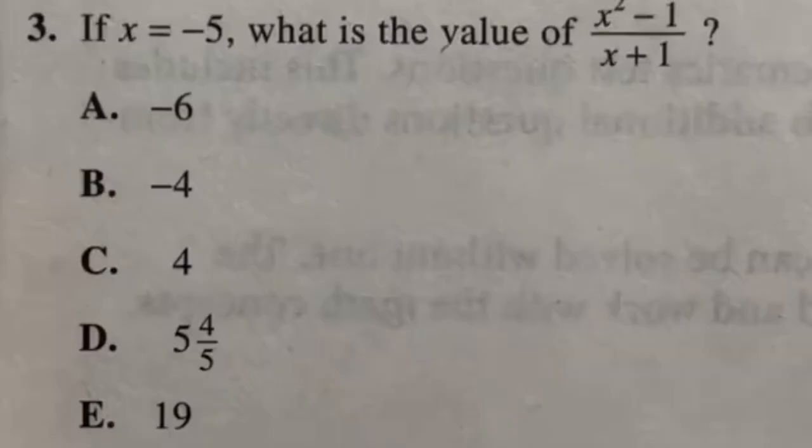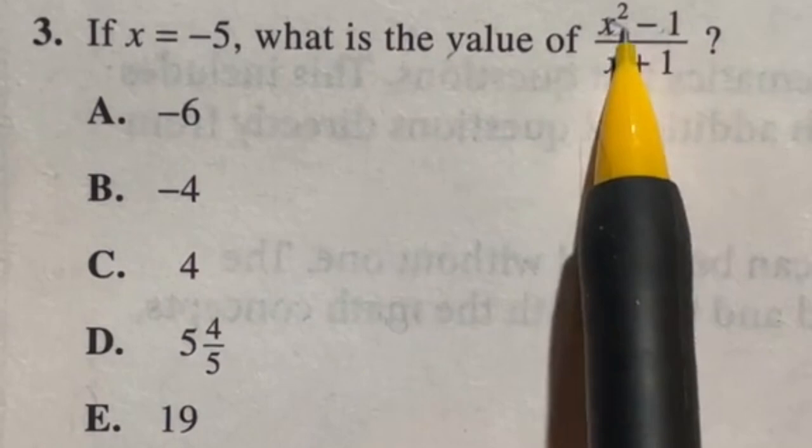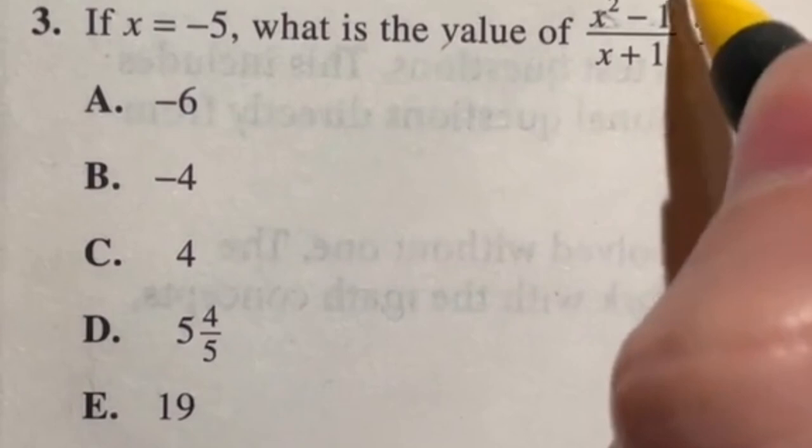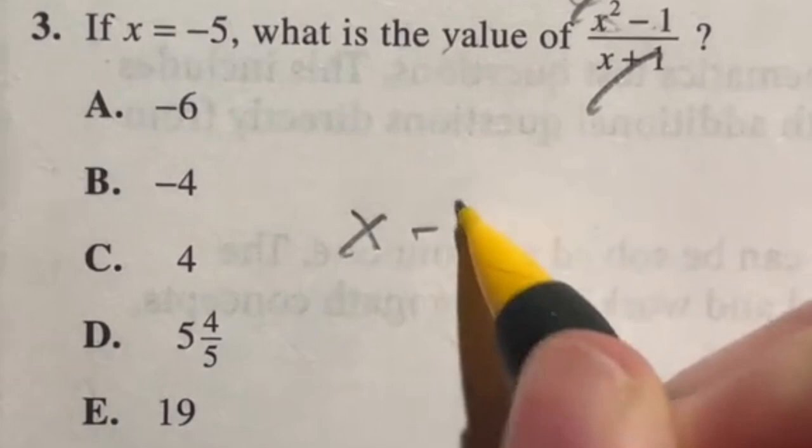So two ways to do this one. You could straight up plug the negative 5 in for x everywhere and solve. Or you can recognize that this is a difference of squares meaning it can be factored into x plus 1 and x minus 1, meaning that the x plus 1 is going to cancel out with the bottom. Now this question just becomes x minus 1 so negative 5 minus 1 is going to give me negative 6 which is answer A.